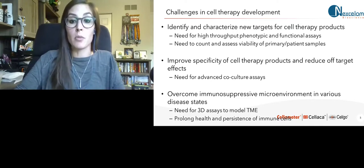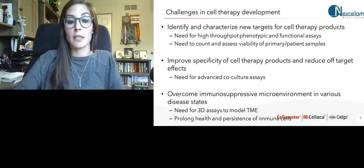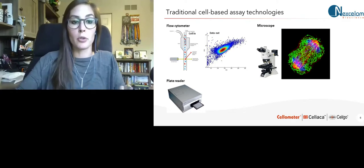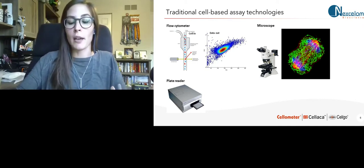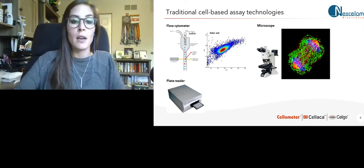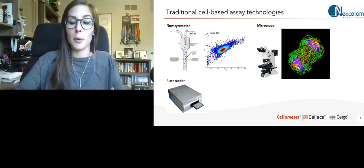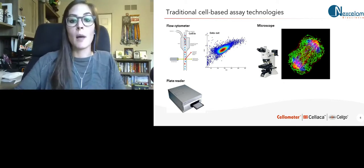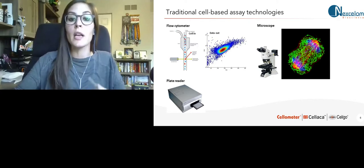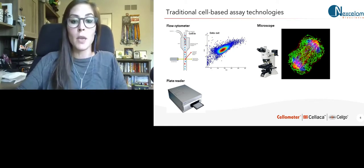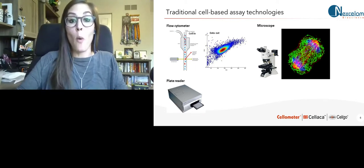Traditional cell-based assay technologies include flow cytometry, where a sample runs through a fluidic sheath with laser detection and data is calculated as scatter plots — but limitations include poor compatibility with adherent cells, time-consuming sample processing, and loss of spatial integrity for 3D architecture. A microscope can maintain three-dimensional architecture but is very time intensive. A fluorescent or luminescent plate reader captures data quickly but only reports well-level data, preventing normalization for well-to-well variations within a cohort of samples.